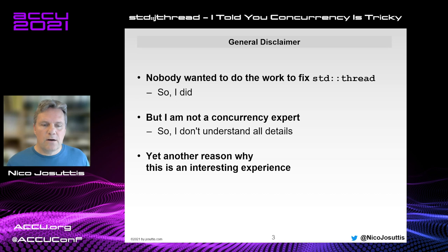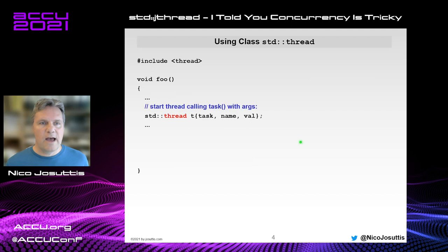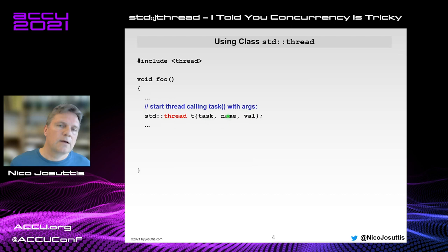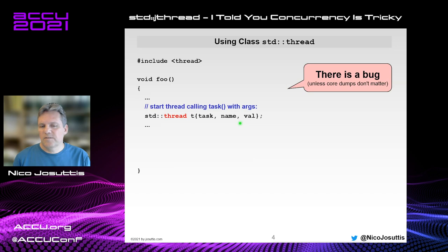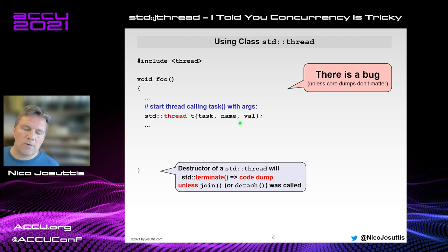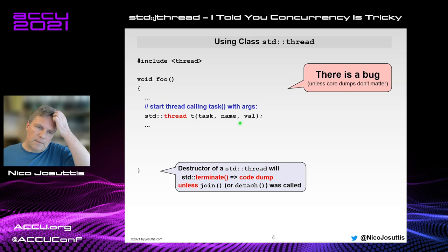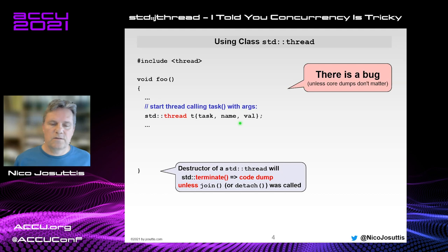In the C++ standard we have a type called `std::thread`. You can start a thread by declaring an object, passing the callable and some arguments. But there's already a bug — because the design of `std::thread` has a serious flaw. It's not okay if you just call the destructor without cleanup. You either have to call join or detach; otherwise the destructor will call terminate, which usually causes a core dump.